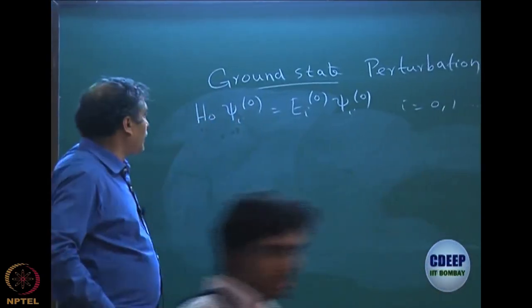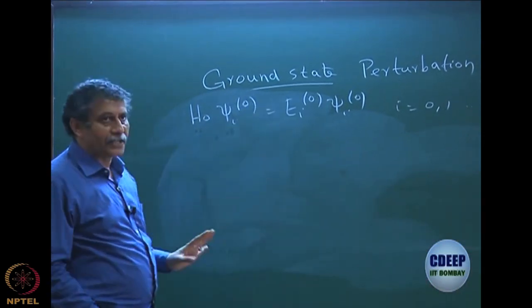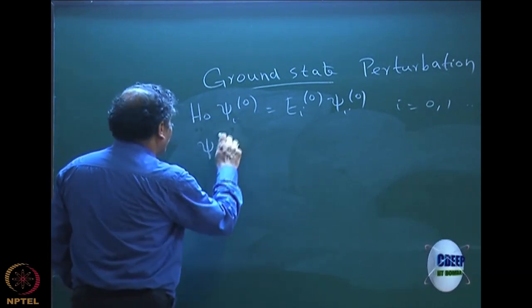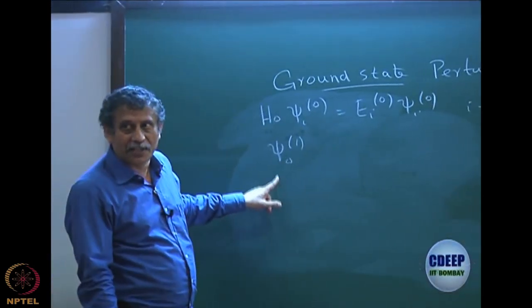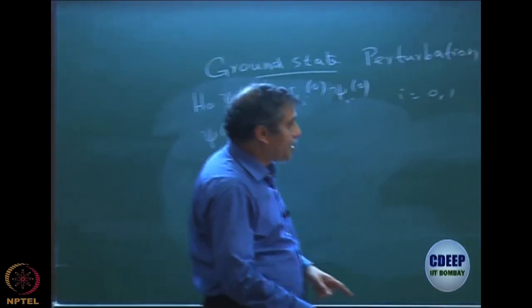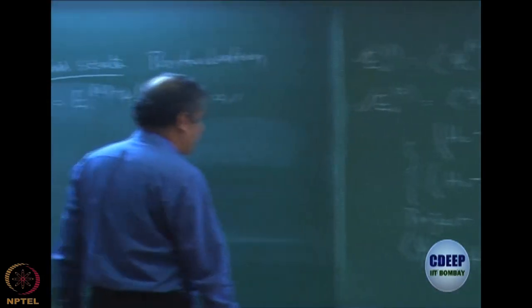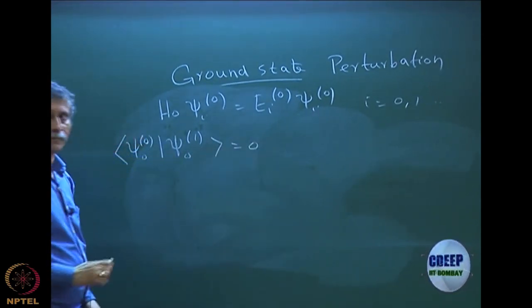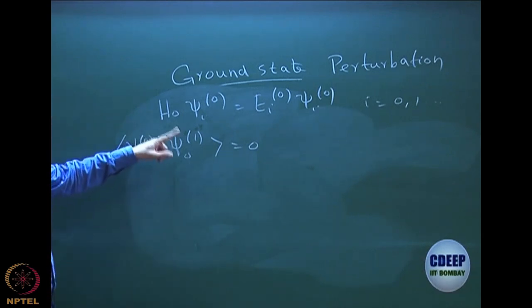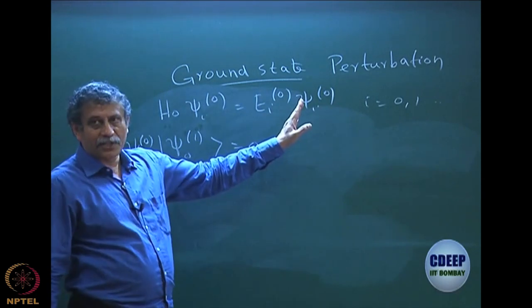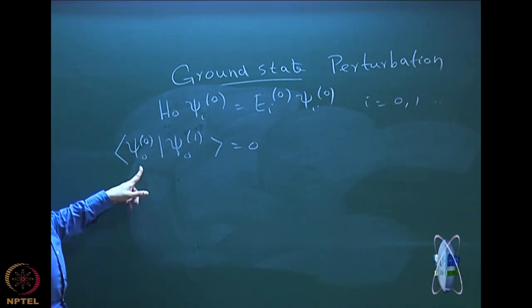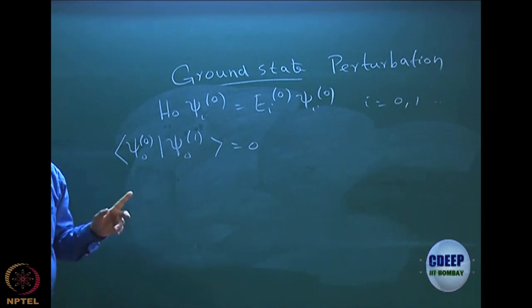I have the entire eigenvalue spectrum that is completely known. I am now going to evaluate ψ01, which is the ground state correction. I first note the intermediate normalization. The intermediate normalization says that when k equals 1, ψ01 is orthogonal to ψ00. That means if I expand ψ01 in terms of these states, which are a complete set of functions, I must ensure ψ01 does not include ψ00 because it is orthogonal.